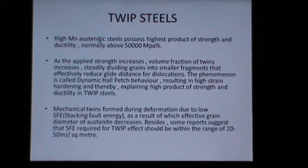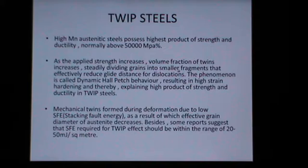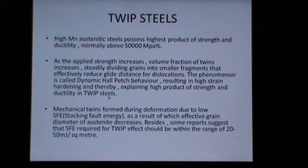High manganese austenitic steels possess the highest product of strength and ductility, normally above 50,000 MPa percent. As the applied stress increases, the volume fraction of twins also increases, thereby steadily dividing the grains into smaller fragments that effectively reduce the glide distance for the dislocations. This phenomenon is called the dynamic Hall-Petch behavior, resulting in high strain hardening, thereby explaining the high product of strength and ductility in TWIP Steels.